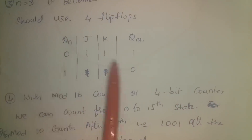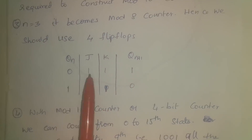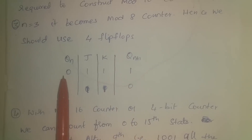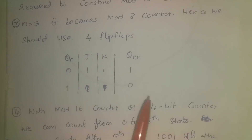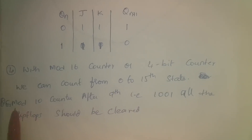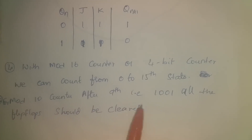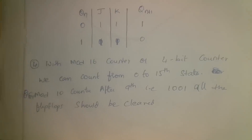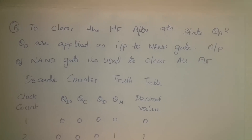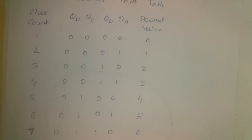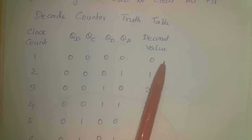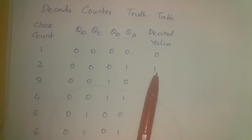This is the JK flip-flop truth table: when both J and K are high, the current state is the toggle of the previous state. With a modulo-16 (4-bit) counter we can count from 0 to 15, but for mod-10 we use a NAND gate to clear all flip-flops after the ninth state (1001). The decade counter truth table: clock count 1 → 0000 (decimal 0); count 2 → decimal 1; count 3 → decimal 2; count 4 → 0011 (decimal 3).